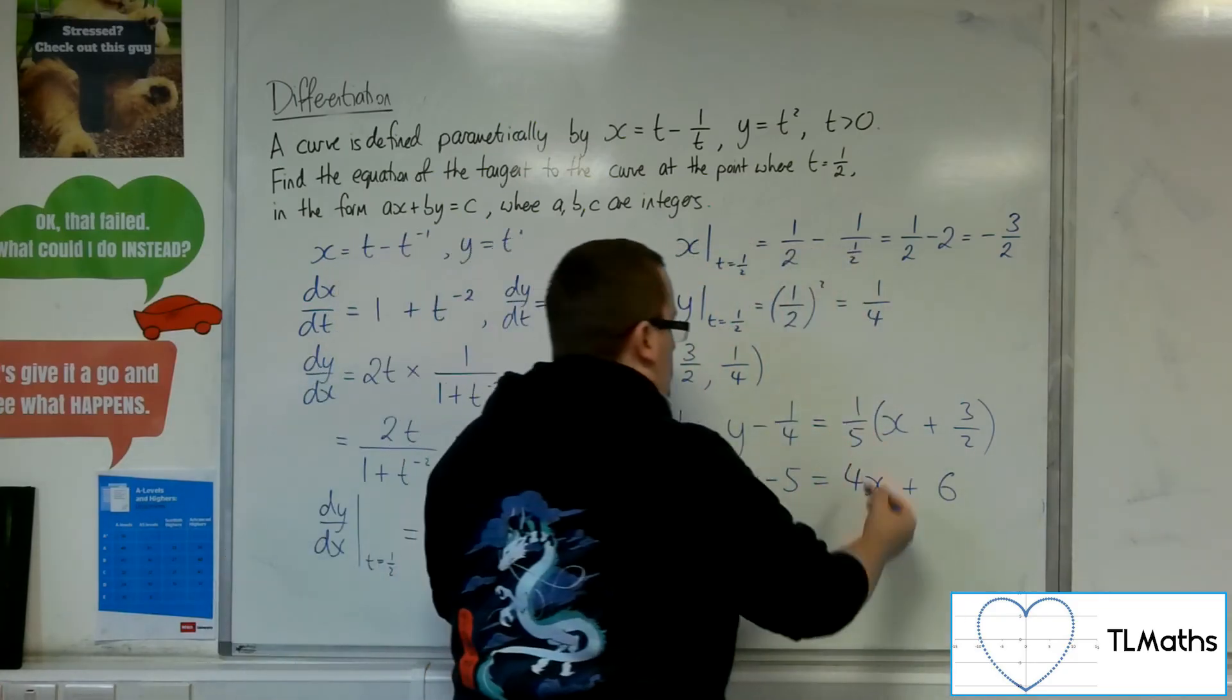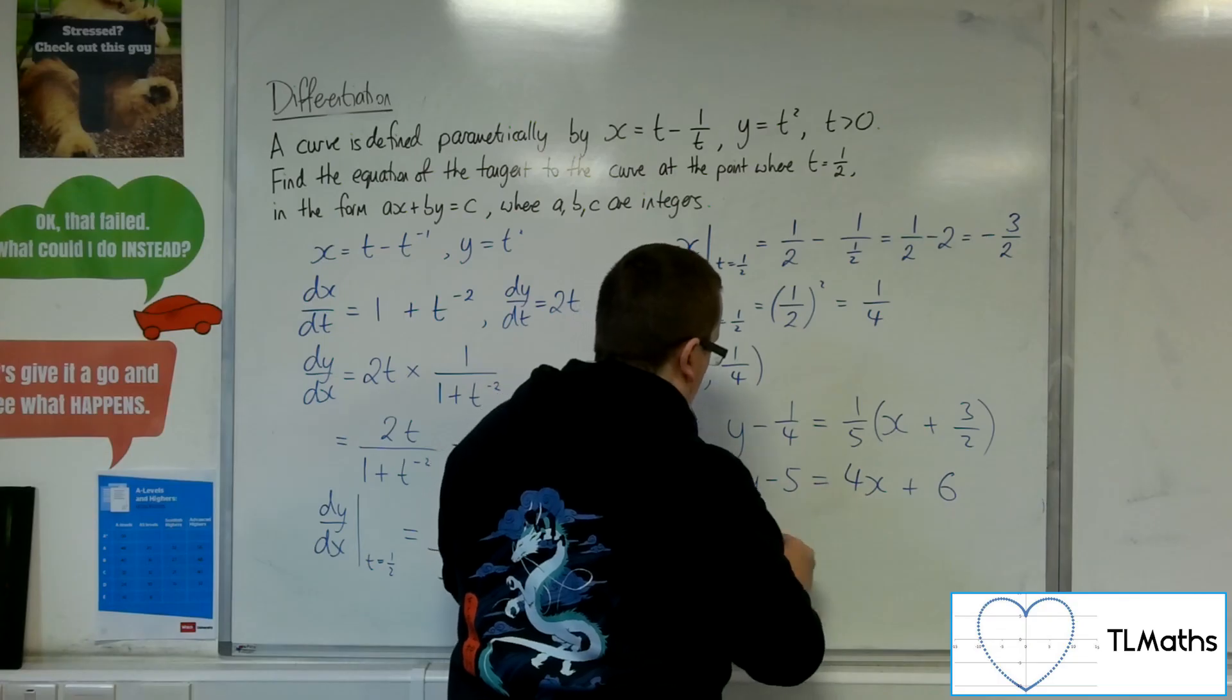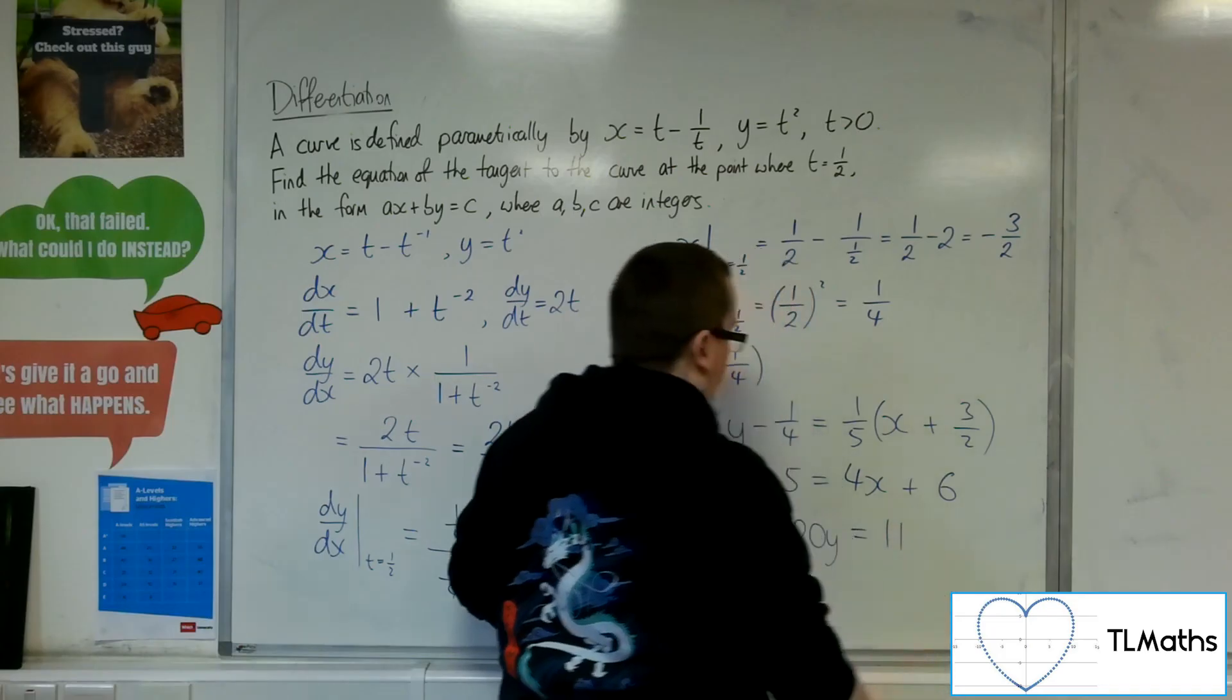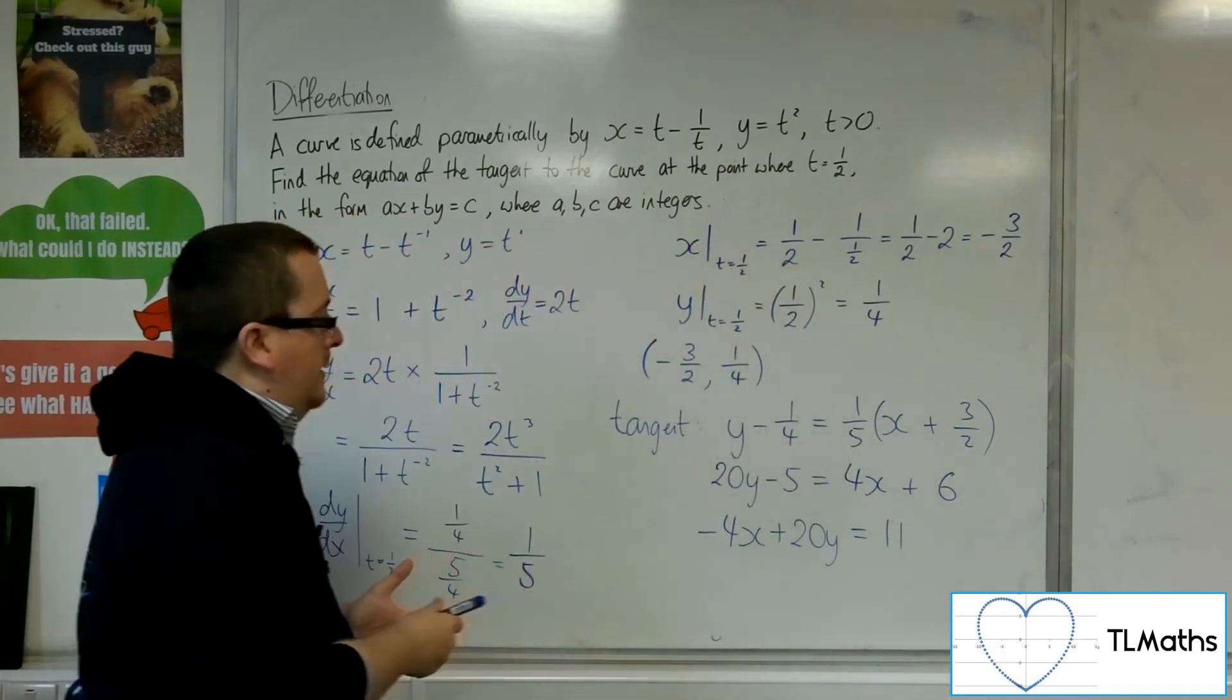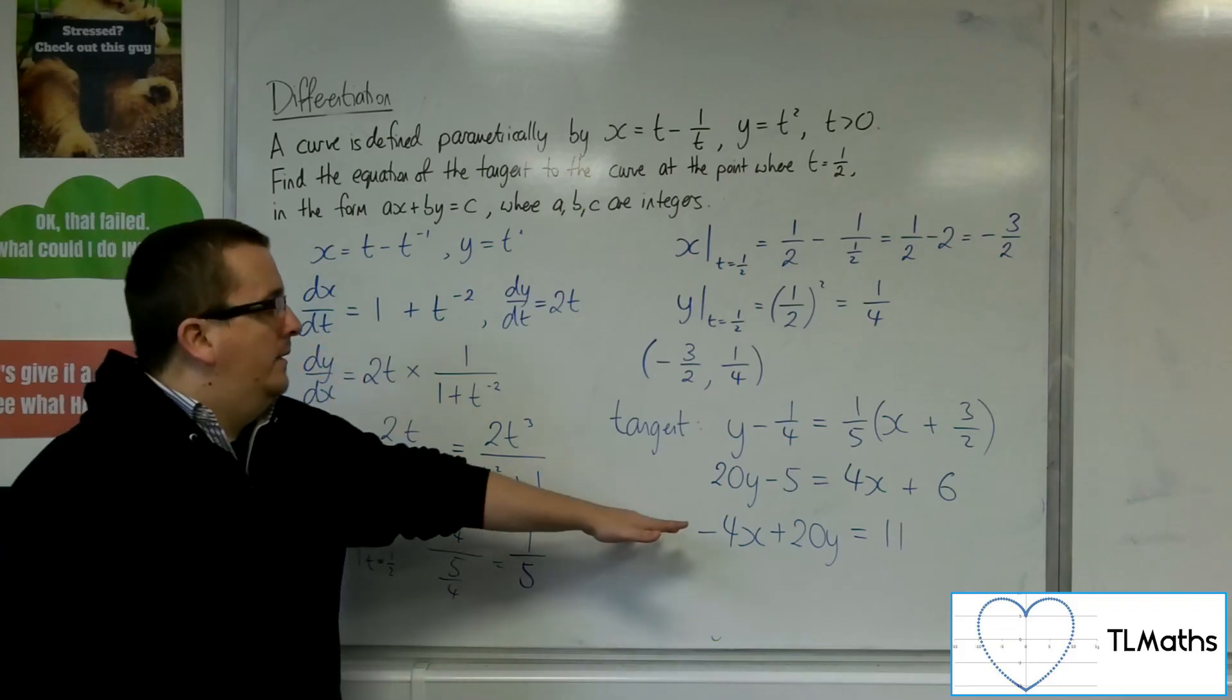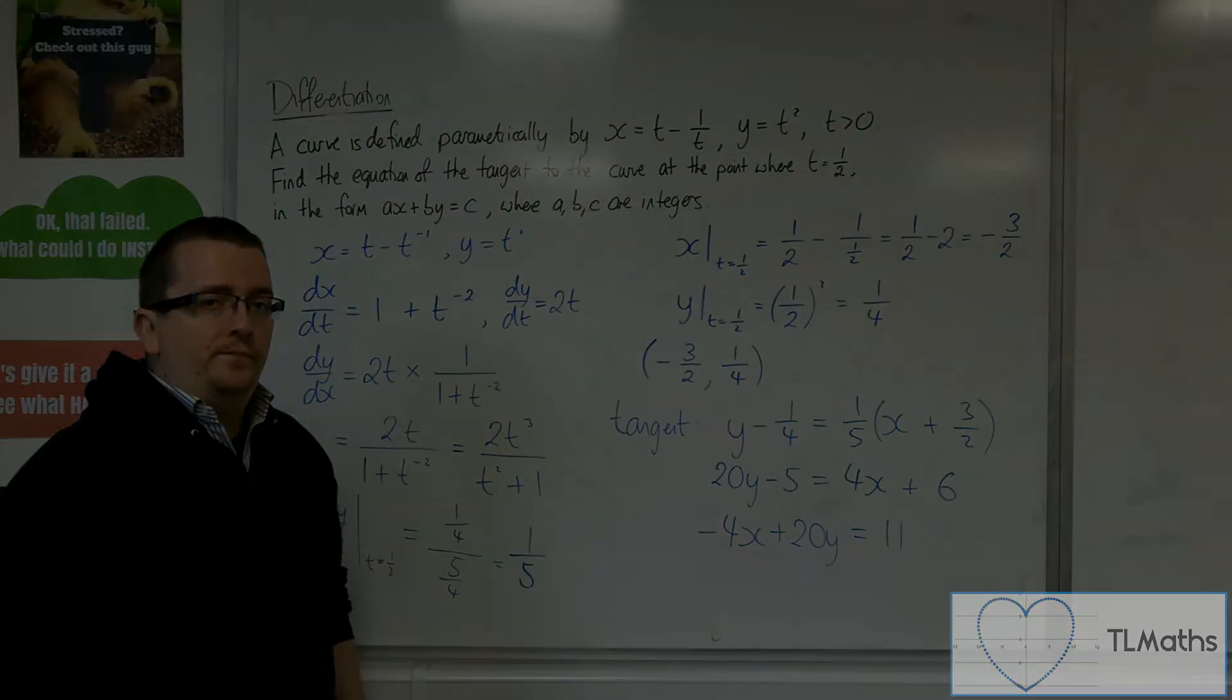So, if I subtract the 4x from both sides, leave the 20y where it is, add the 5 to both sides, I get it into this format. Minus 4x plus 20y equals 11. And that is the equation of the tangent that I was looking for. The answer is minus 4x plus 20y equals 11. Thank you.